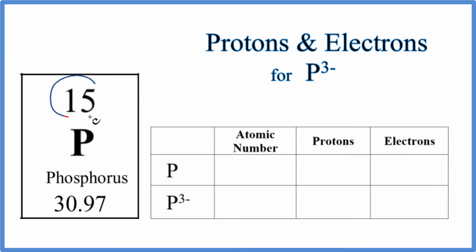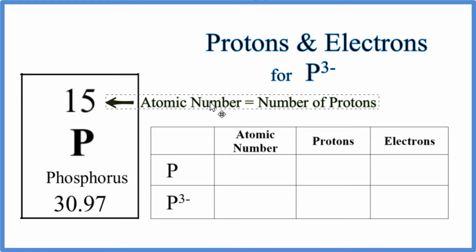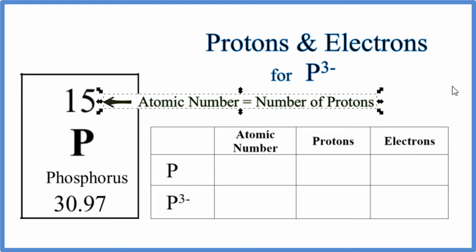And it has an atomic number of 15. That atomic number tells us the number of protons. So the atomic number for phosphorus is 15 and that means it has 15 protons.